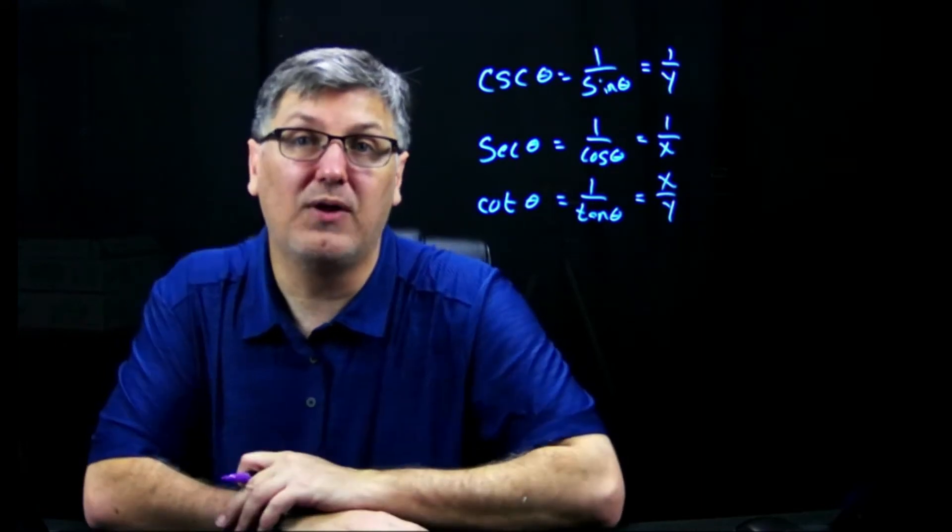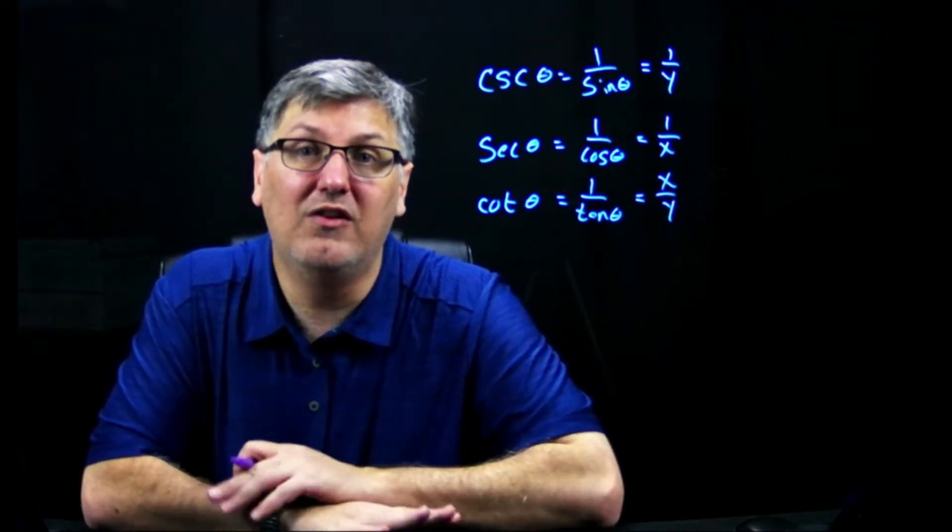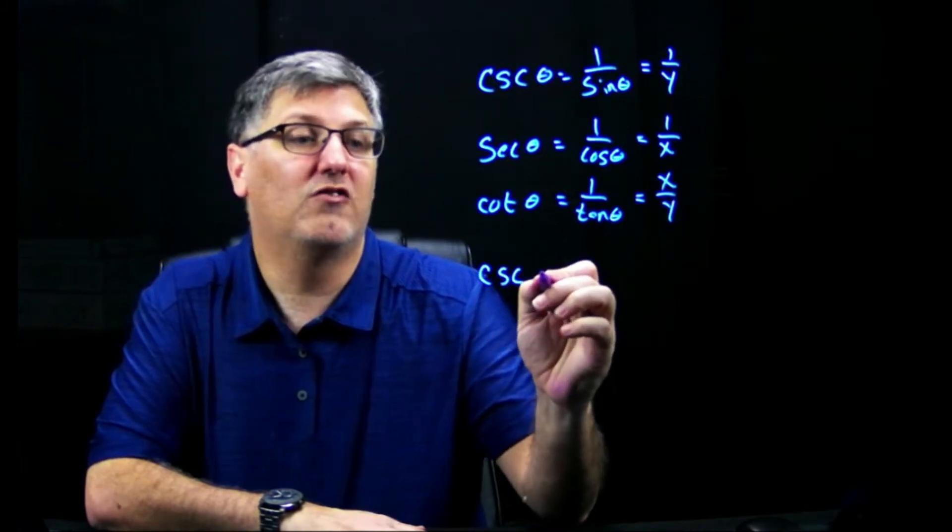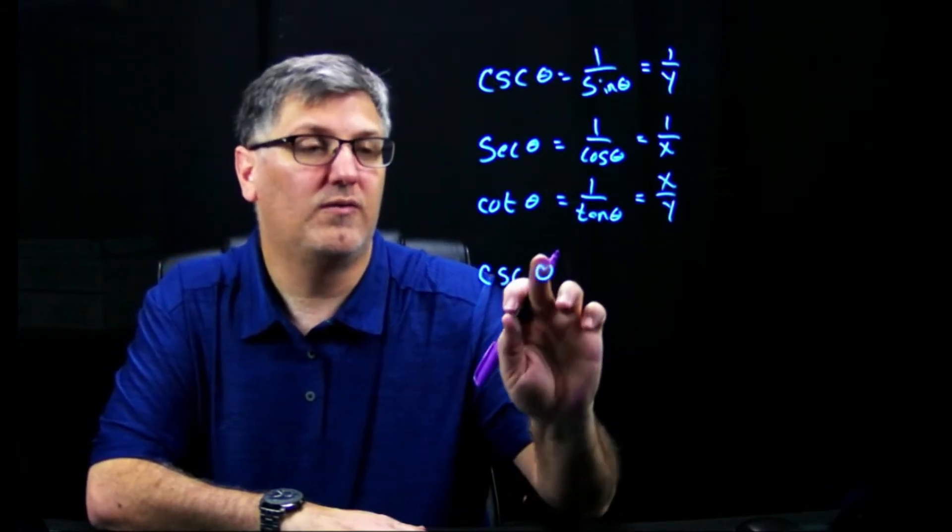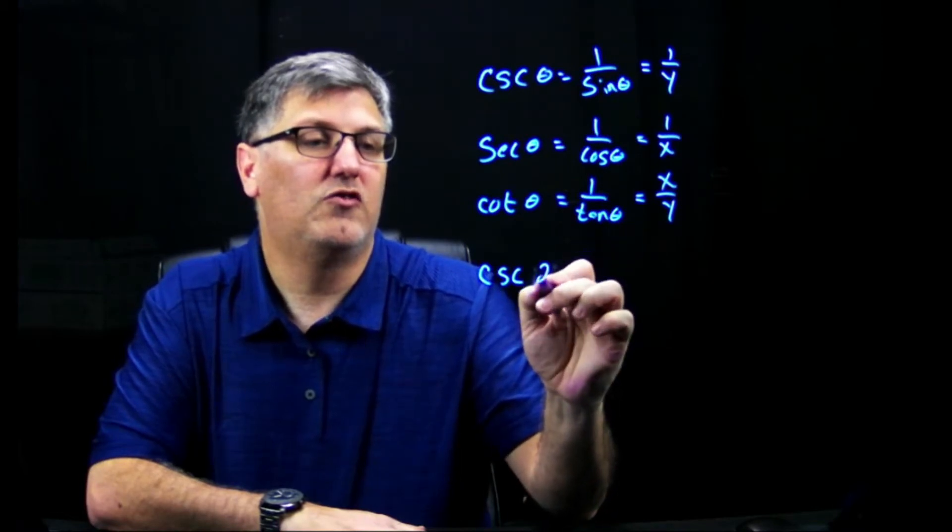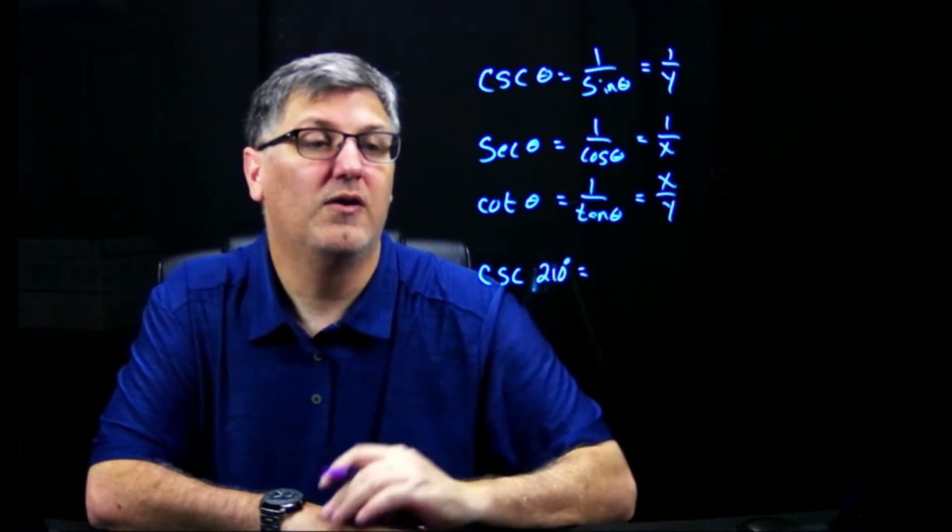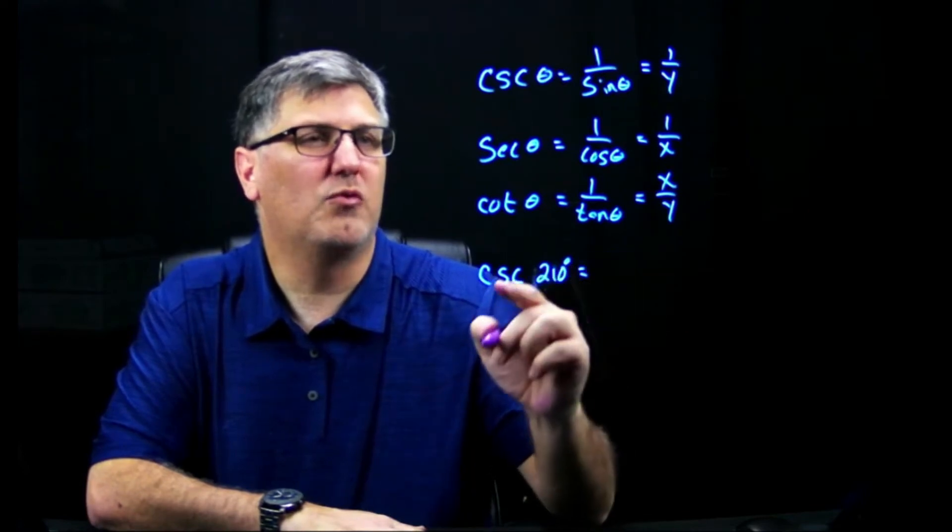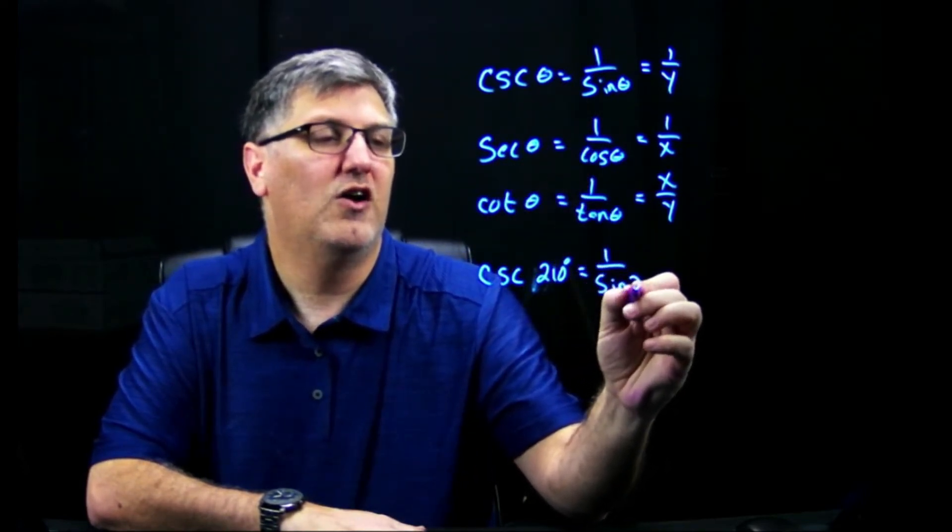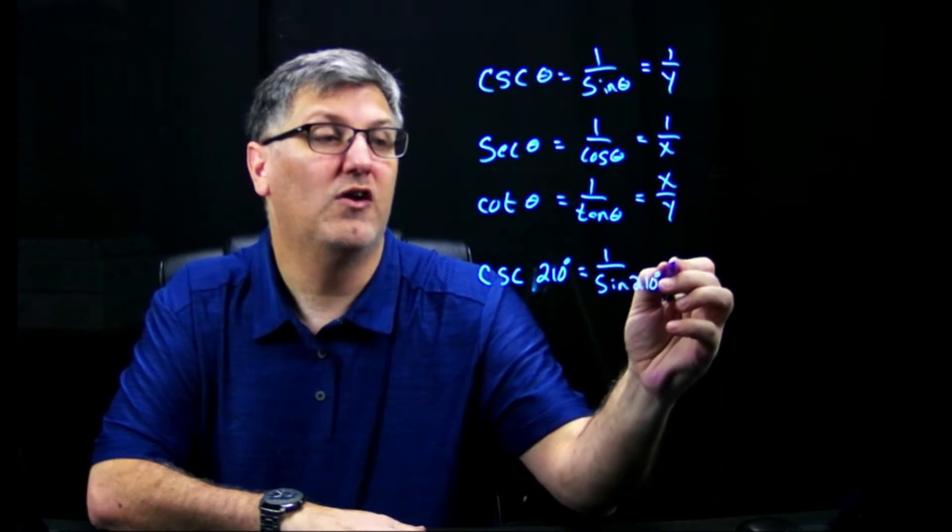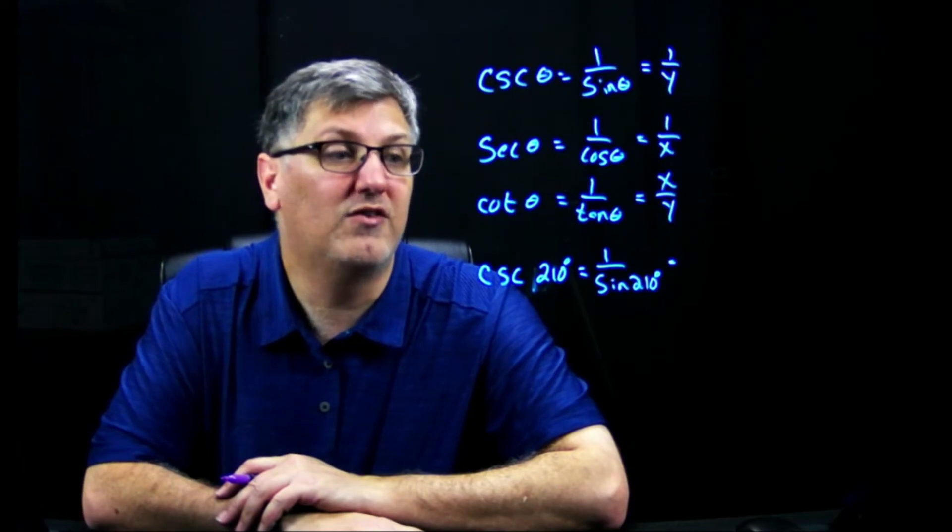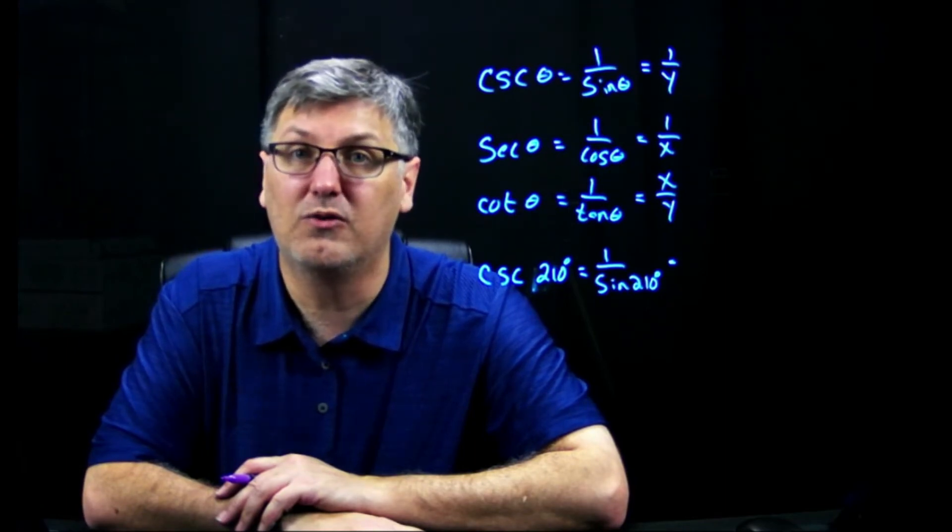So now, I can simply ask you questions to give me the exact value of, let's say, cosecant of 210 degrees. Well, what this really means is cosecant, I can think of it as 1 over sine of 210 degrees. At that point, we need to look at the unit circle and figure out what is sine at 210 degrees.